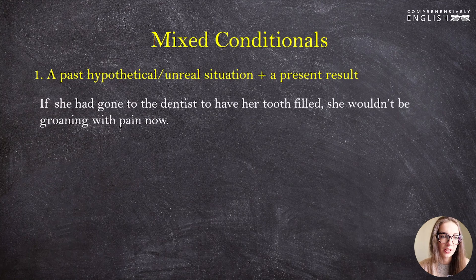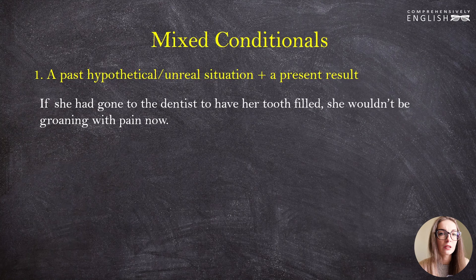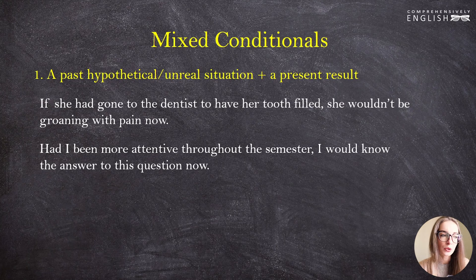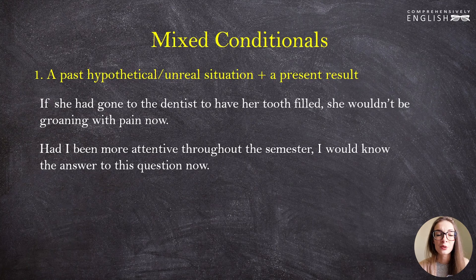More examples: 'If she had gone to the dentist to have her tooth filled, she wouldn't be groaning with pain now.' She didn't do that and now she is groaning with pain. 'Had I been more attentive throughout the semester, I would know the answer to this question now.' The word order in this conditional clause is inverted — we can say 'if I had been' or 'had I been.' The idea is the same: if something had been done in the past, now the situation would be different.